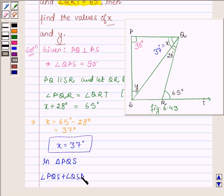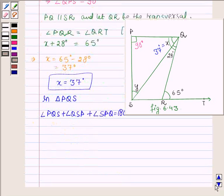QSP plus angle SPQ is equal to 180 degrees and angle PQS is 37 degrees which we have just found. Angle QSP is y and angle SPQ is 90 degrees. So this is equal to 180 degrees which further implies